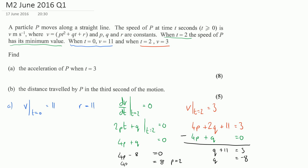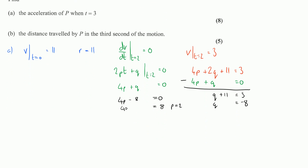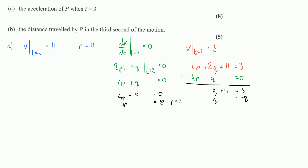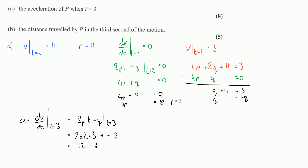Now we find the acceleration of p when t equals 3. Acceleration equals dv/dt, evaluated at t equals 3. We already differentiated earlier and had 2pt plus q. Substituting in all the values we now know: 2 times p (which is 2) times t (which is 3), plus q (which is minus 8). That's 2 times 2 equals 4, times 3 equals 12, so 12 minus 8 gives us an acceleration of 4 m/s².